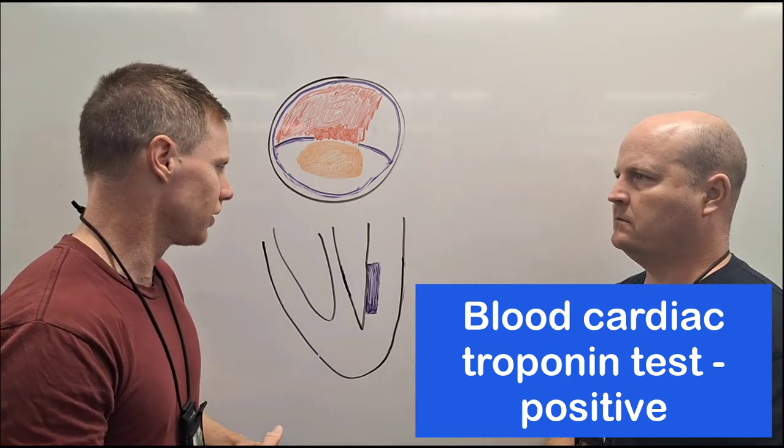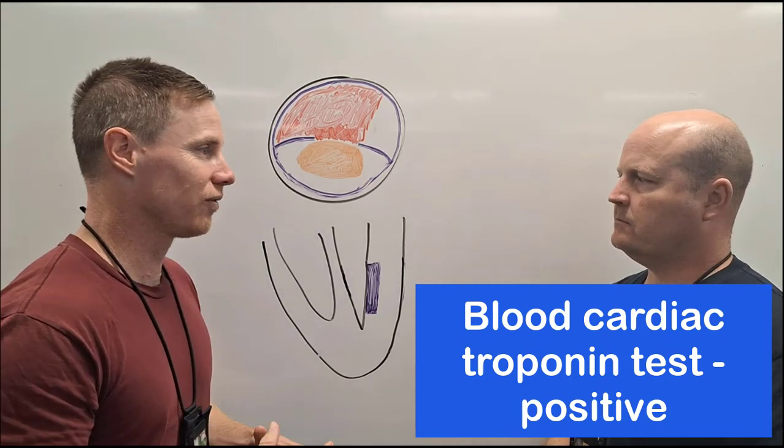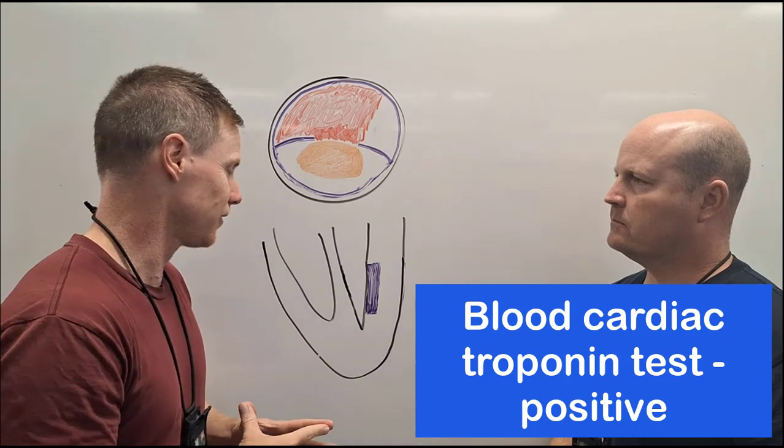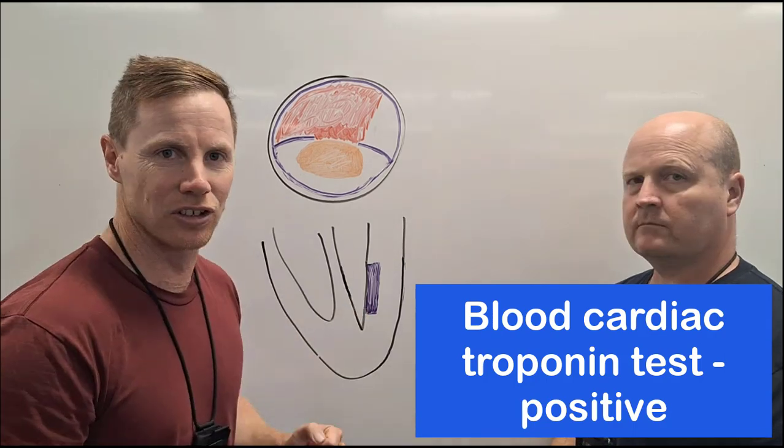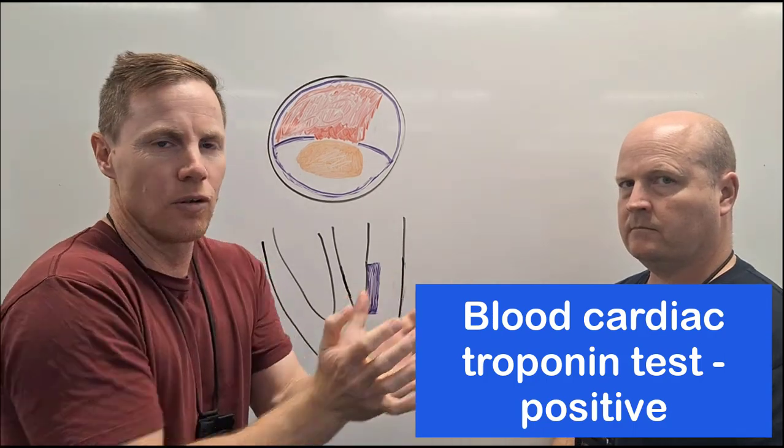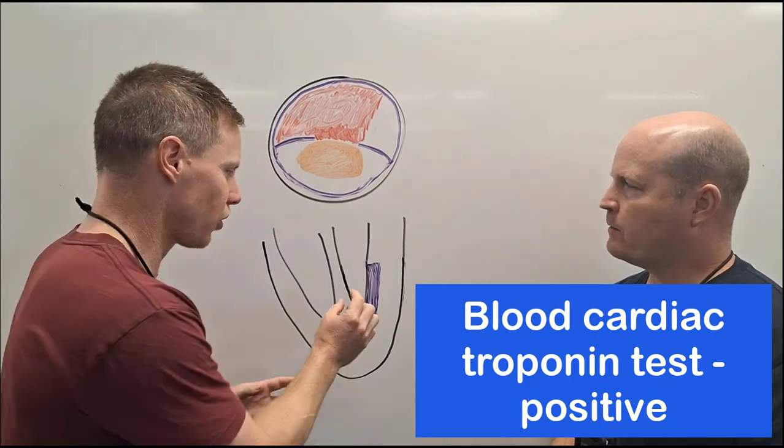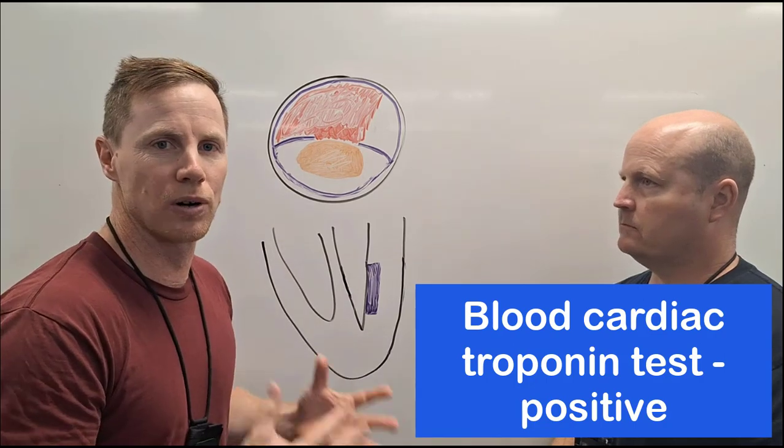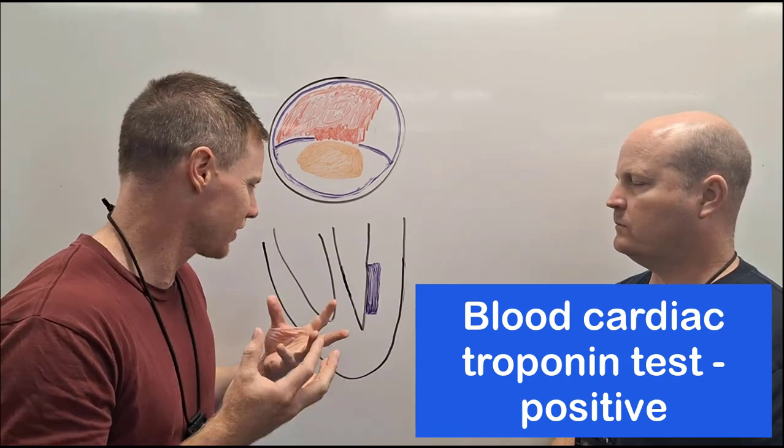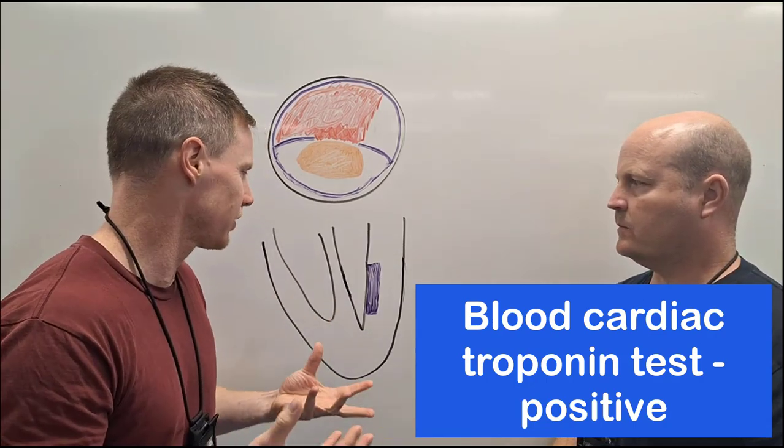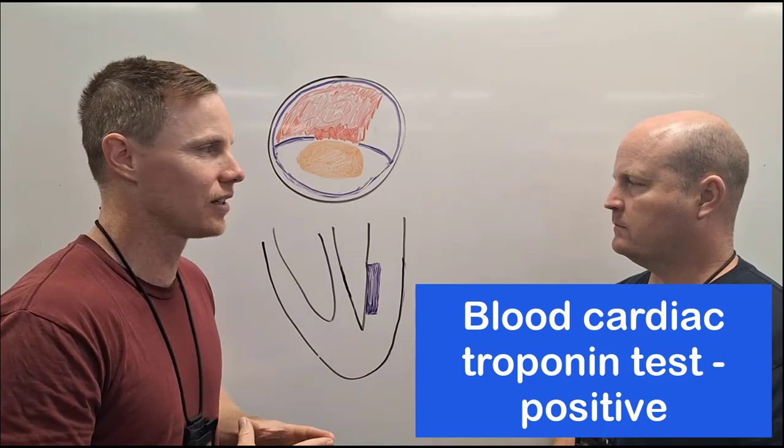So what is troponin? Troponin is a protein found inside the cardiac cell. When these cardiac cells die they release what's inside them and we can test for a protein called troponin. This type of troponin is specific to cardiac cells.